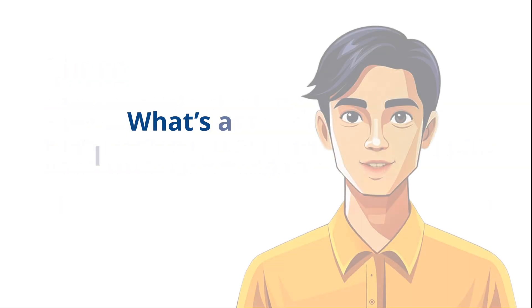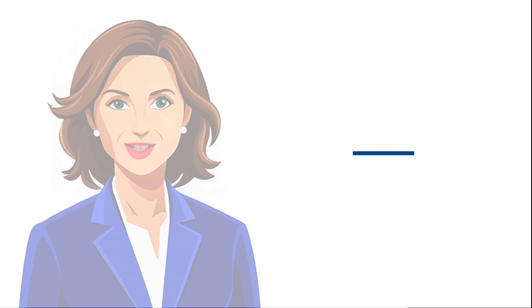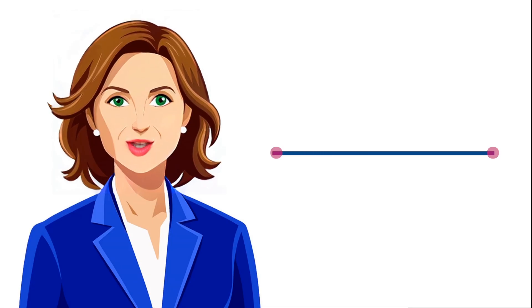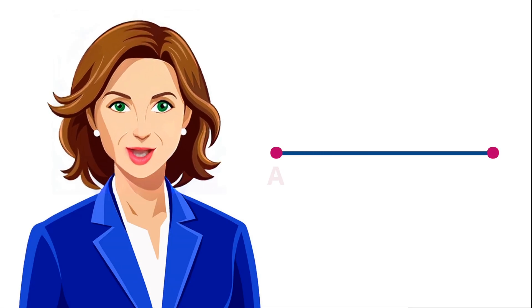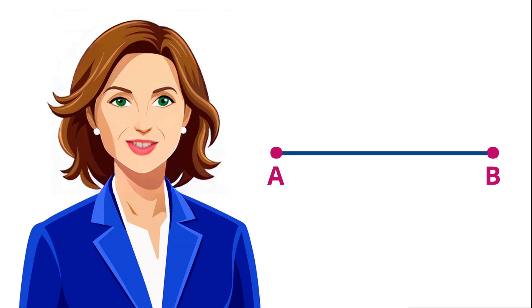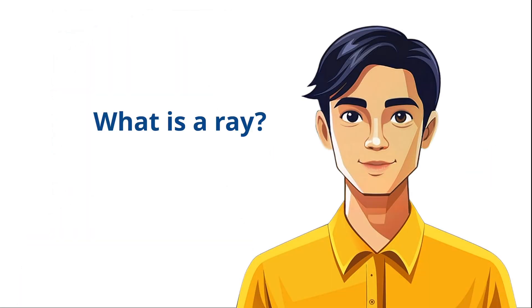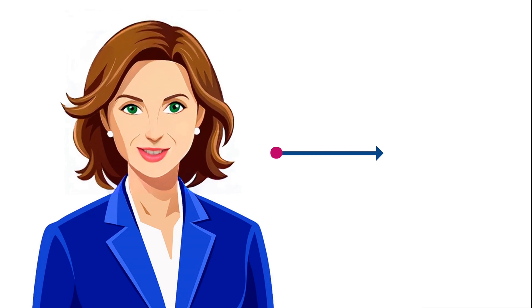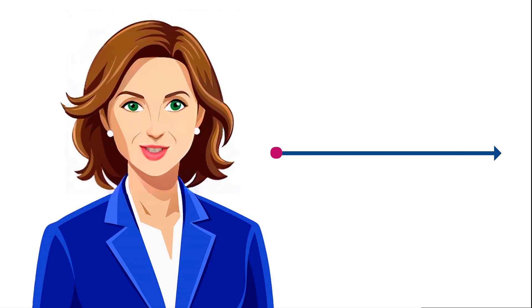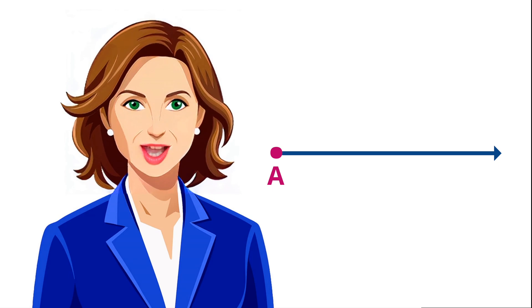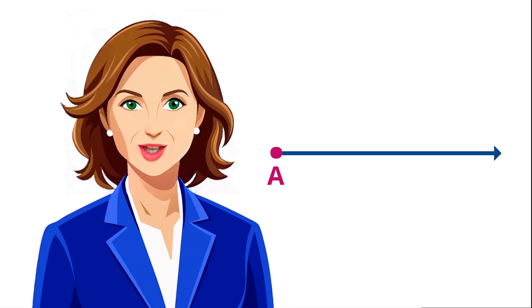Then what's a line segment? A line segment is a part of a line with two endpoints. It has a specific length because it doesn't go on forever. And what is a ray? A ray starts at one point and extends infinitely in one direction, so it has one endpoint while the other side goes on forever.